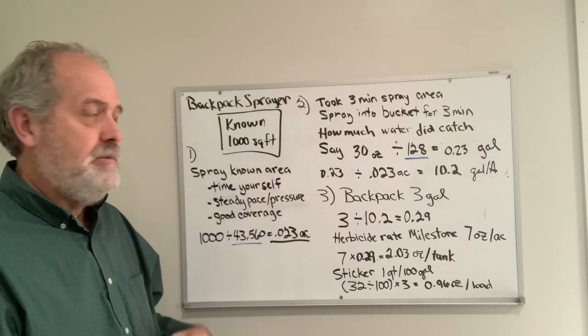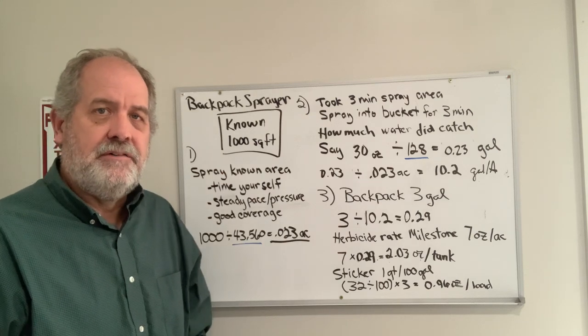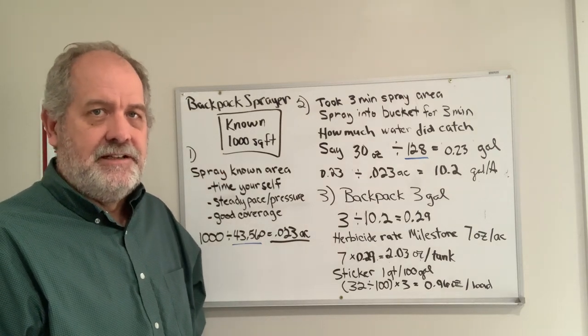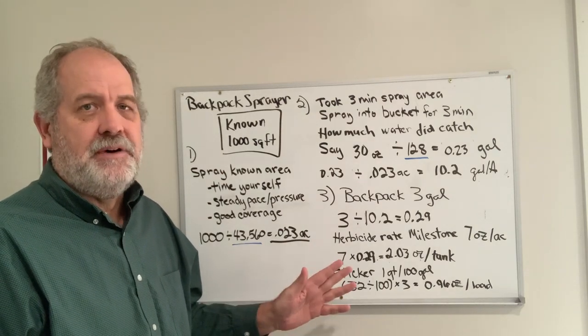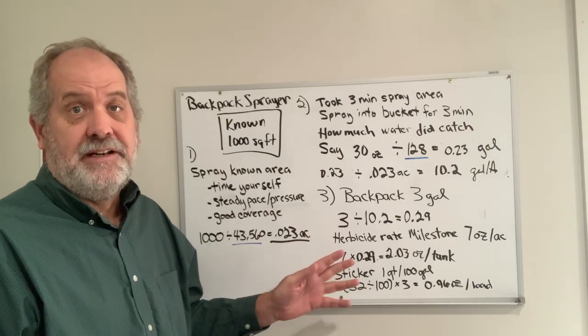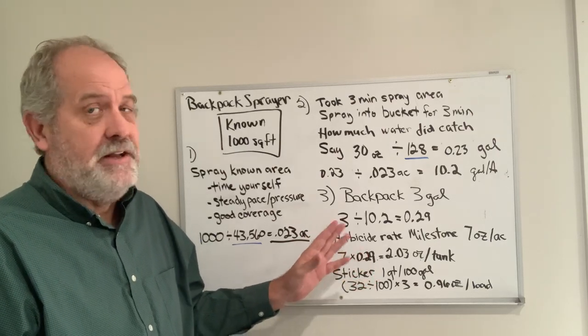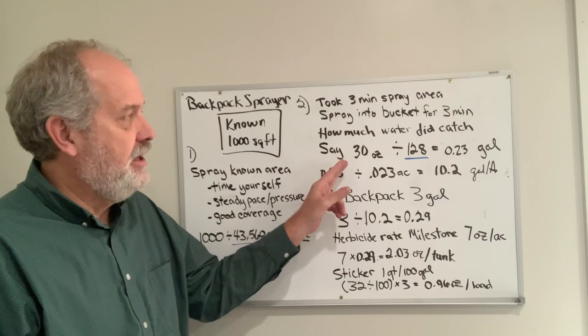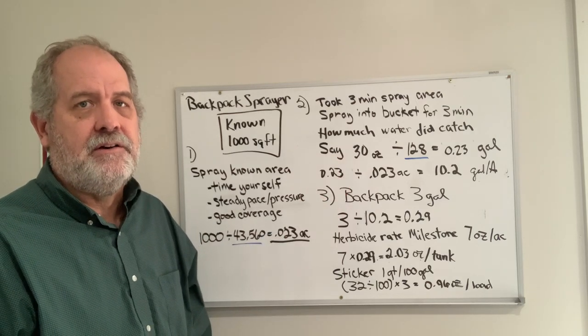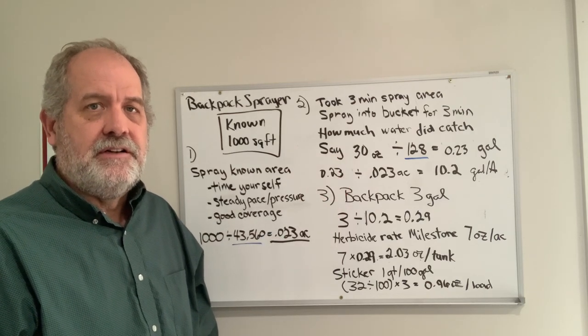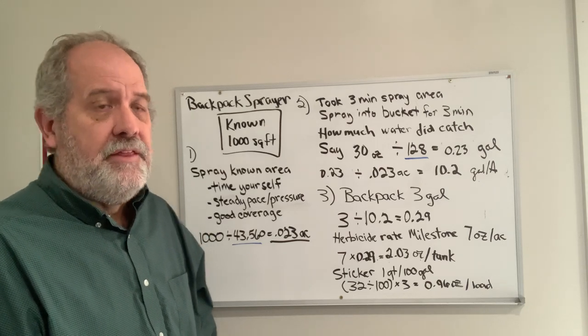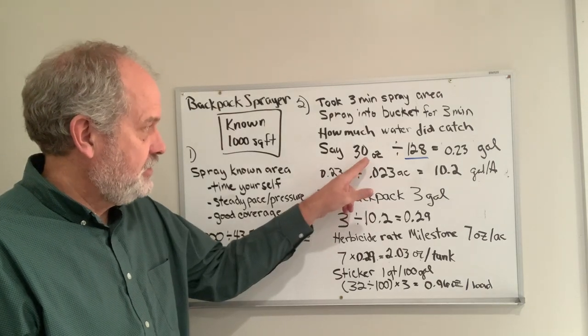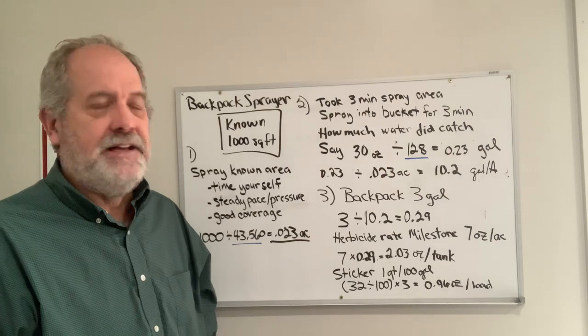Number two: for that same amount of time it took you to spray your known area as consistently as possible, spray into a bucket. It may be one minute, two minutes, forty-five seconds, depending on how fast you walk, but spray into a bucket for the same amount of time. You'll usually collect a few ounces. Thirty would be a reasonable number. So let's say you caught 30 ounces in that bucket.